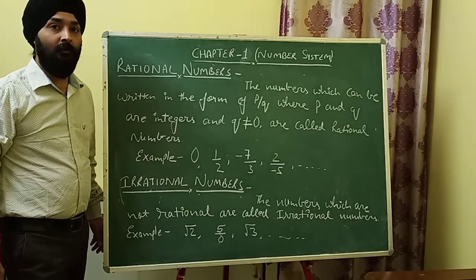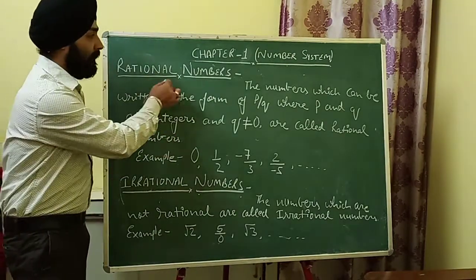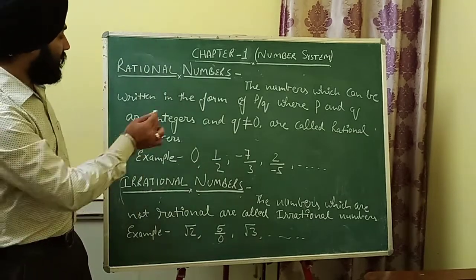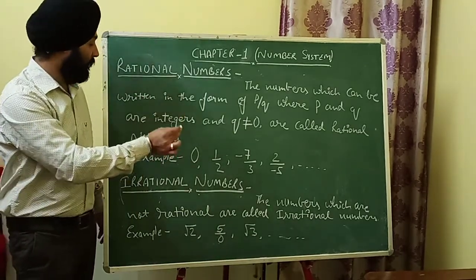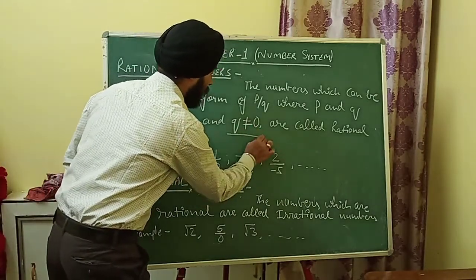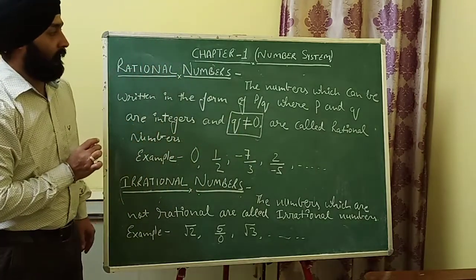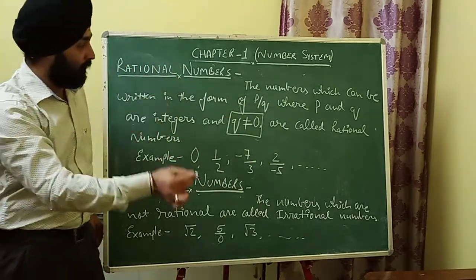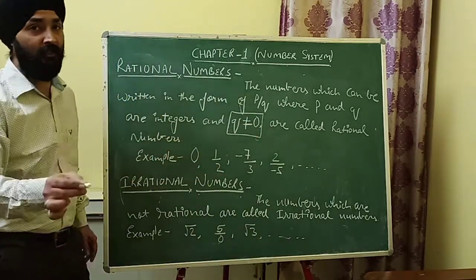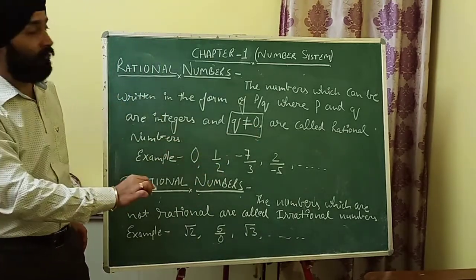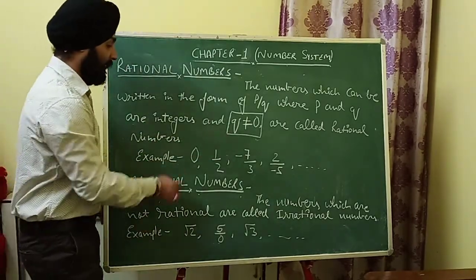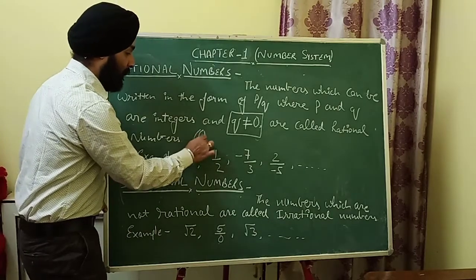Rational numbers are denoted by capital Q. A rational number is a number which can be written in the form of p upon q, where p and q are integers and q is not equal to zero. It means the denominator will never be zero.